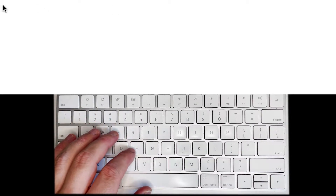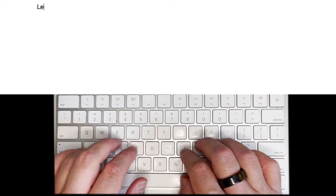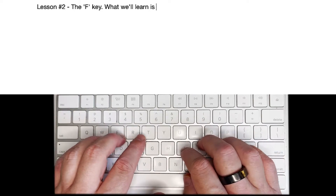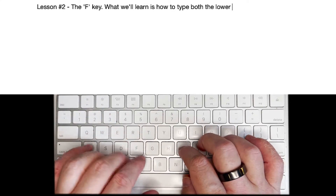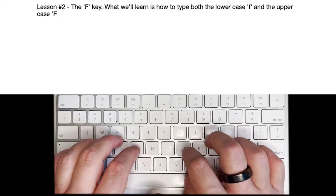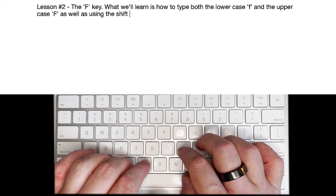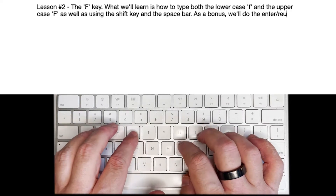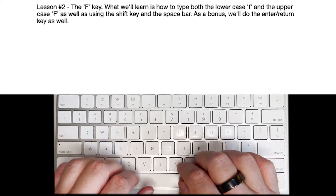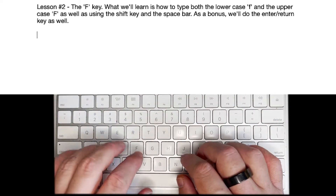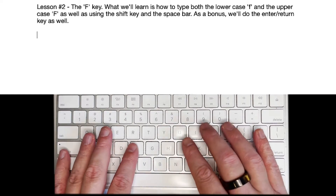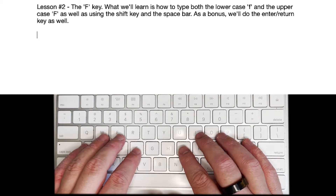So I assume you've got it up. Now just click anywhere on it — today is going to be lesson two, and that will be the F key. What we're going to learn in this lesson is how to type both the lowercase F and the uppercase F, as well as using the shift key and the space bar. As a bonus, we'll do the enter or return key as well. So let's start with the F key, beginning the whole exercise with your eyes off the keyboard. I want you to look at your computer screen and move your hands onto your keyboard, trying to find the grooves that are the F and J key only with your index fingers.